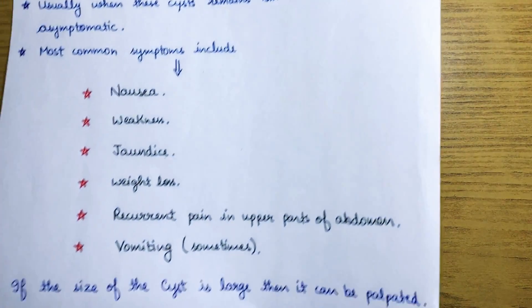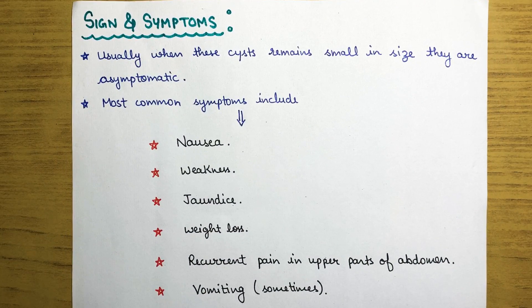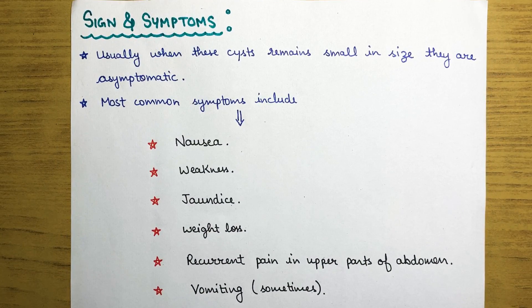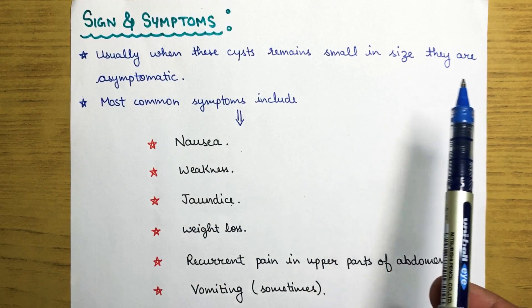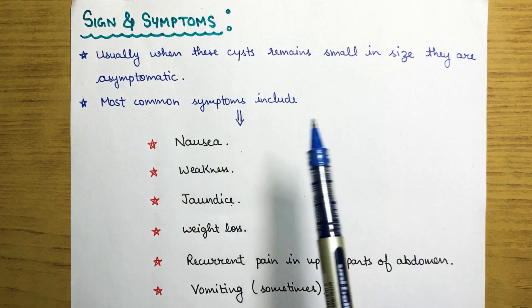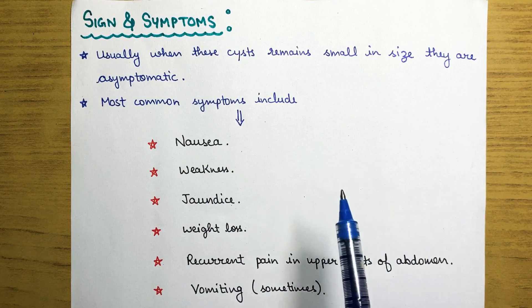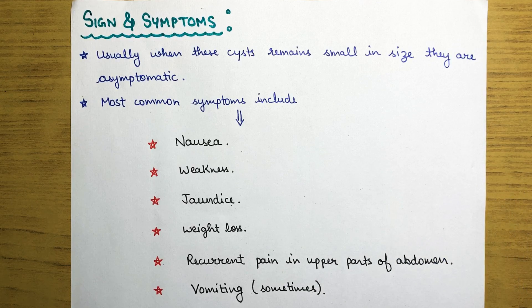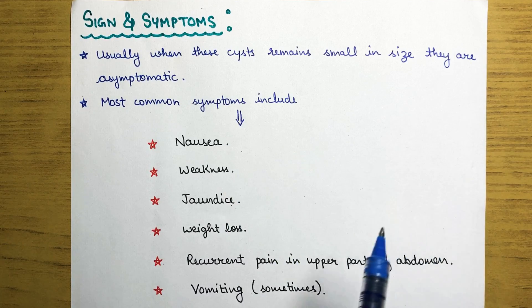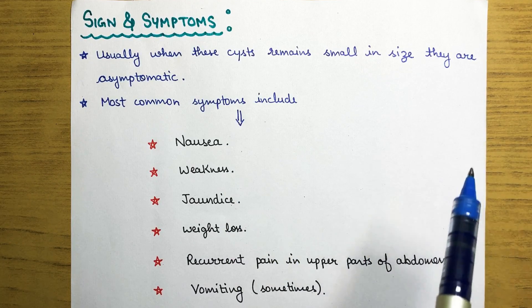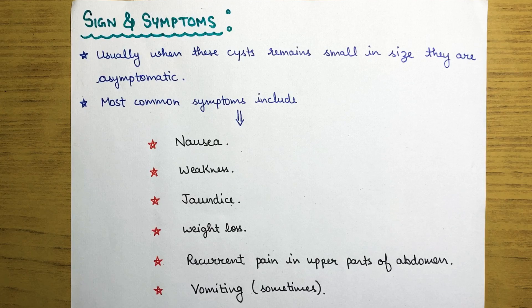Now we will move on to signs and symptoms — how a patient will present in the clinic. Usually these cysts remain small in size and are asymptomatic, so when cysts are small the patient usually doesn't feel anything abnormal. But in some cases symptoms can appear.